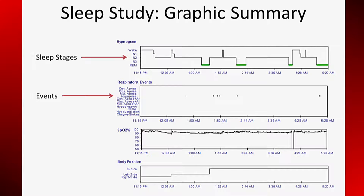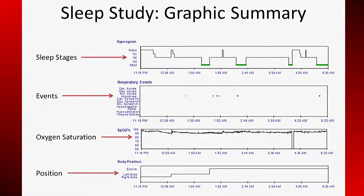Since this patient has very few events, this importance is not immediately apparent. Other cases in other lectures will demonstrate that associations of events with stage REM or supine position may exist. Like events, the graphical pattern of oxygen saturation is very important. The table will tell us the overall saturation, but the graphic gives insight as to the cause of the oxygen desaturation. Many things happen with changes in body position; the graphic allows correlation of events, sleep stage, and oxygen saturation with body position.